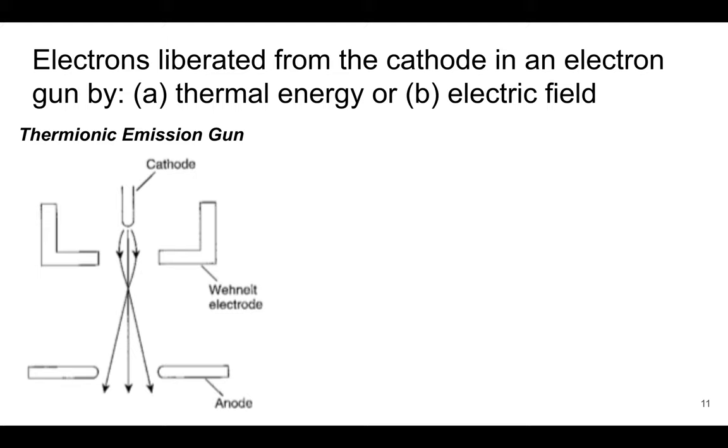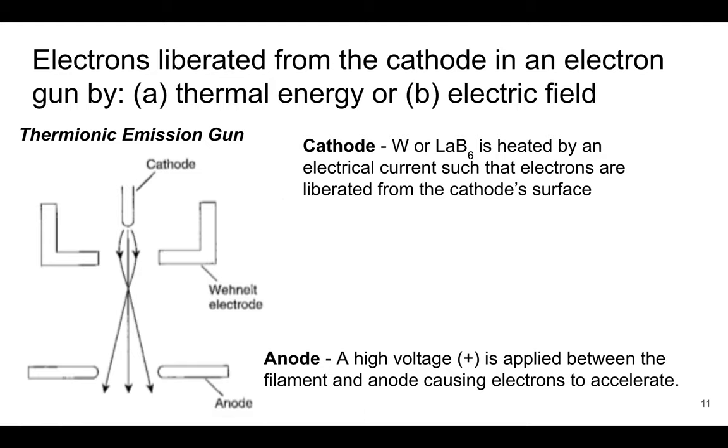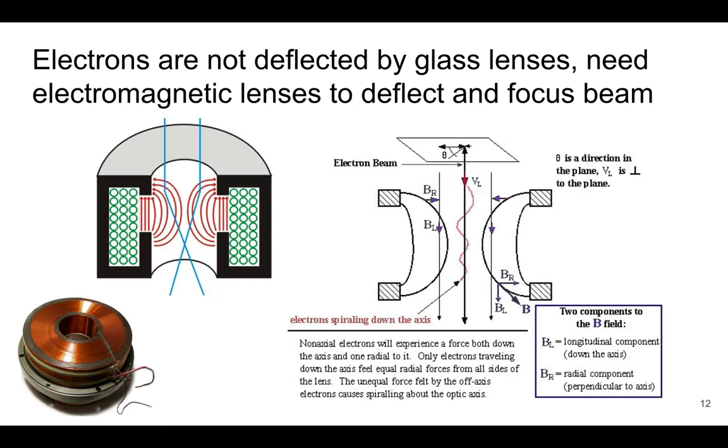So here, I just want to go through some of the components that we talked about for SEM. Again, very similar. So electron gun, the same types. We can have a thermionic gun, it could be tungsten or LaB6, that will affect the brightness and so forth. And we can also have the field emission guns, and that's what a lot of the new guns are going to.